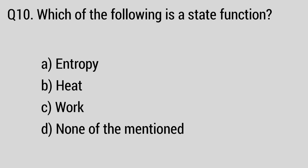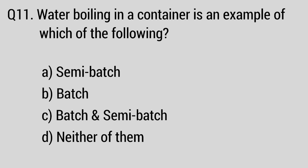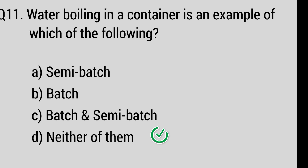Question number ten: Which of the following is not a pressure measurement device? The right answer is option D. Question number eleven: Which of the following is a type of reactor? The options include neither of them, semi-batch, batch, and batch and semi-batch.